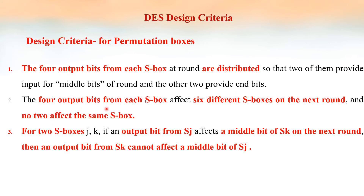The four output bits from each S box affect six different S boxes on the next round, and no two affect the same S box. For any two S boxes J and K, if an output bit from S_J affects a middle bit of S_K on the next round, then an output bit from S_K cannot affect a middle bit of S_J. These are the rules or criteria related to the permutation boxes.